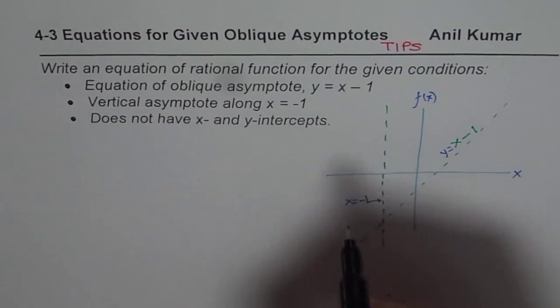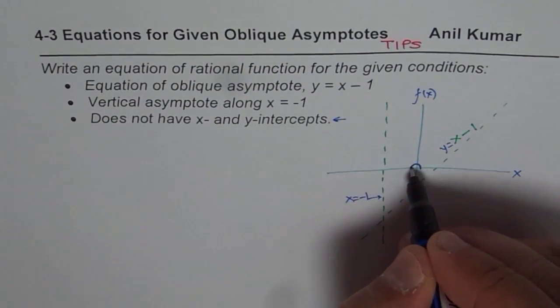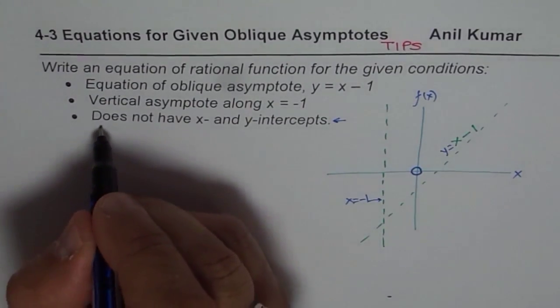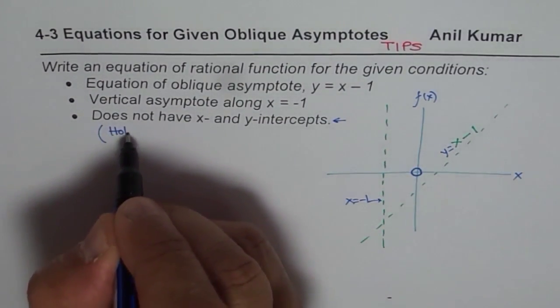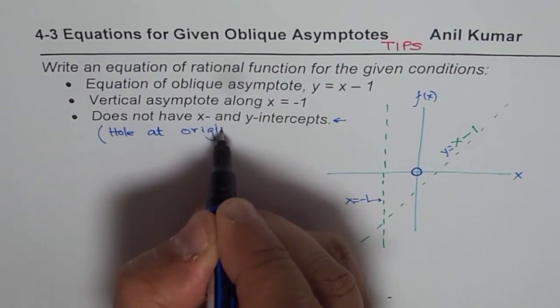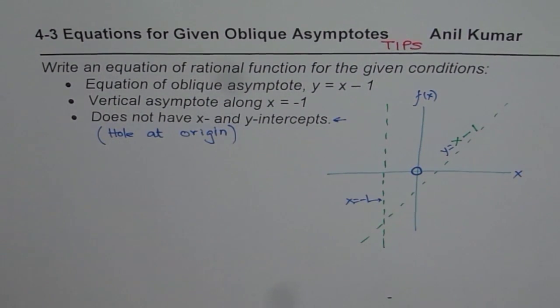So the best way here to satisfy this condition is that we can say that it has a hole at origin. So that really means it has hole at origin. Now once you think like that, then it becomes simpler to write down this function. So now let's write down the function.